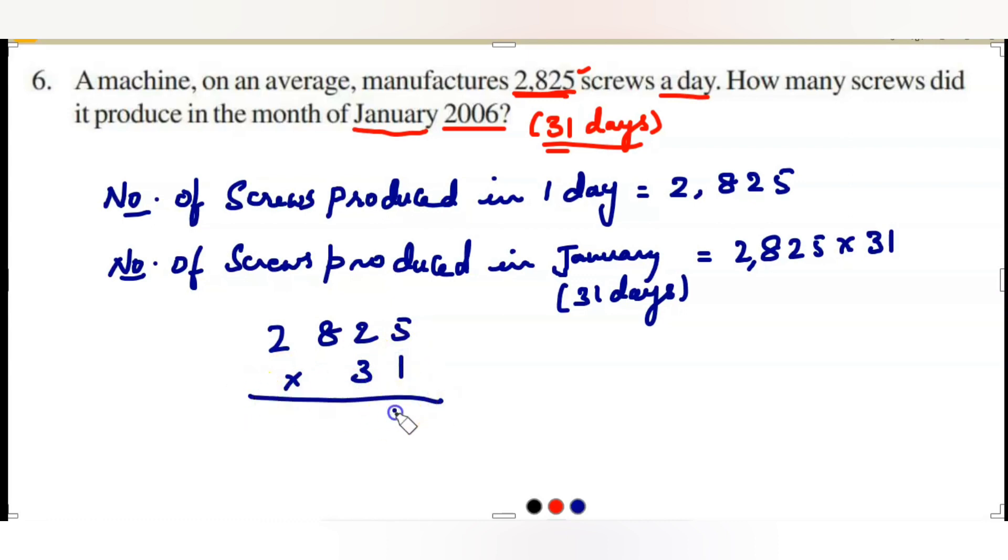First, multiply with 1: 5, 2, 8, 2. Next, multiply with 3: 3, 5 is 15. So the answer is 87,575. It produces in 31 days, 87,575 screws. We will go to the next question.